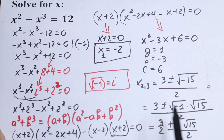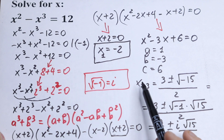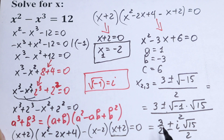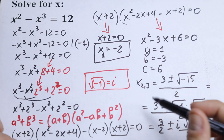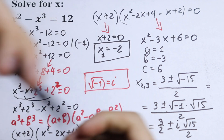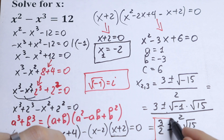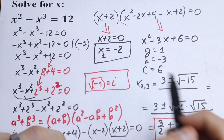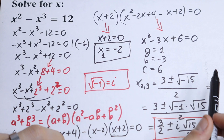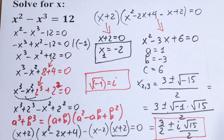And this will be our second and third roots. So one root in real numbers and two roots in complex numbers. And x equals minus 2 is our first root in real numbers.